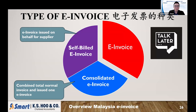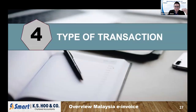E-invoices also have two other types: one is called a self-billed e-invoice and the other is a consolidated e-invoice. I will explain these later, as there are certain industries that may require you to issue self-billed or consolidated e-invoices.